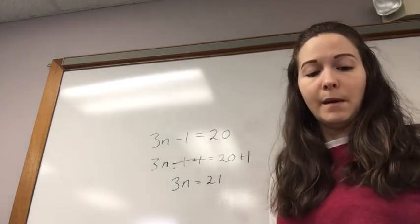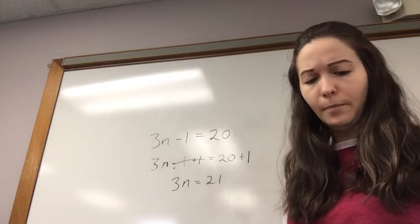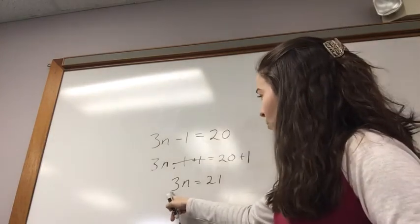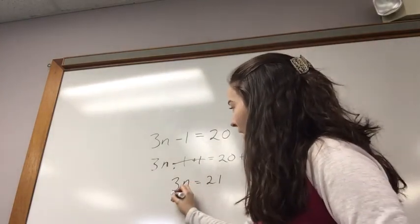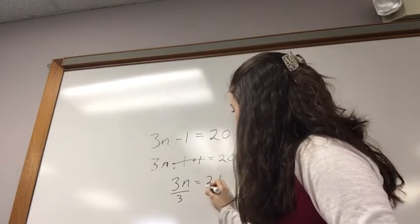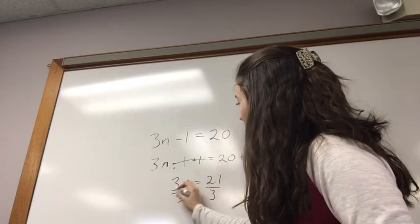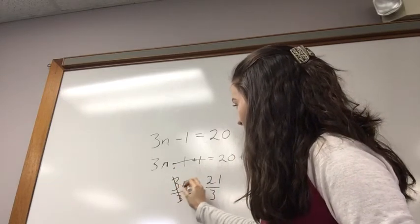And then we follow the same step that we have been doing all along. And we'll divide by 3 on both sides to isolate n. 3n divided by 3, we simply cancel out the 3, leaving us with n.